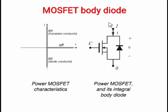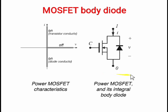The MOSFET body diode operates similarly. The transistor is replaced by a MOSFET connected anti-parallel with the diode. The MOSFET is also a two quadrant switch operating in the first and second quadrants, same as the BJT configuration.